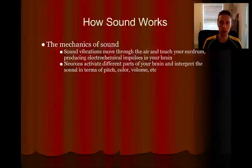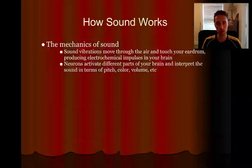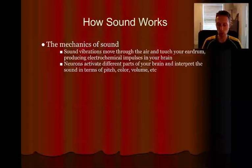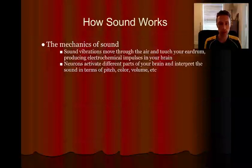Let's talk about how sound works. On a basic physical level, talking about the laws of physics — what is sound? Sound is literally vibrations that move through the air. They touch your eardrum, your brain interprets those sounds and makes them into what we consider to be sound. The neurons shoot around in different areas of your brain, and we interpret sound in terms of pitch, color, volume, and all those other kinds of things.